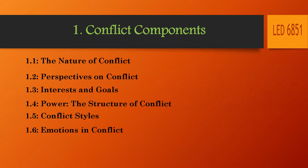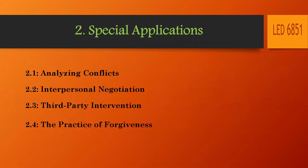In the Components, we discuss the nature of conflict, perspective of conflict, interests and goals, and the role of them in conflict. Power — the structure of conflict is based upon power and conflict styles. One of the most interesting topics in new trends in psychology is emotions and affective science, emotions and conflicts. And in the part of application, we talk about how to analyze conflicts, interpersonal negotiations, and sometimes intrapersonal negotiations.